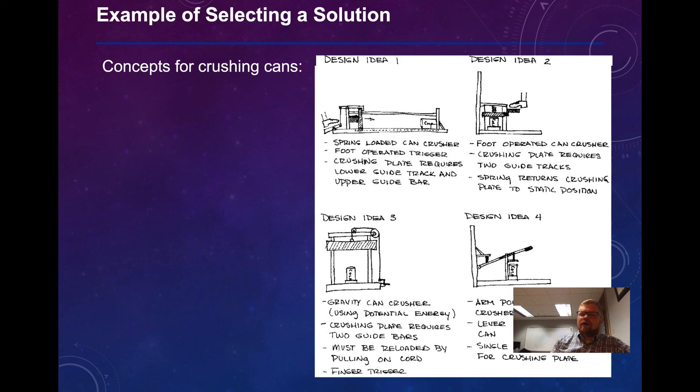Design idea three involves having a gravity can crusher using potential energy. You've got two guide bars with a heavy plate. You use a pulley system to pull that heavy plate up, and then you let it go to crush that can. You have to reload it by pulling out a cord. It's essentially a finger trigger. And design idea four is an arm-powered can crusher. There's a lever action which crushes the can. There's a single guide track for the crushing plate. And all you do is use manual power to lift and crush the can.